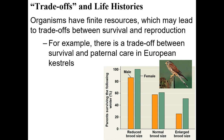Here's one species of bird that can have a normal, enlarged, or reduced brood size — so we're looking at variation within a single species. With a normal brood size, roughly 60% of parents survive the winter. If they lay a lot of eggs, especially dad's survival decreases — he's putting so much energy into raising those babies that his health suffers. On the other hand, if the brood size is small, he's very likely to survive because he didn't put as much energy into caring for the babies.